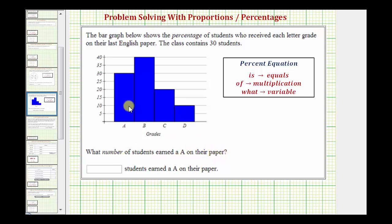So looking at the bar graph, specifically at bar A, notice how 30 percent of the students receive an A.